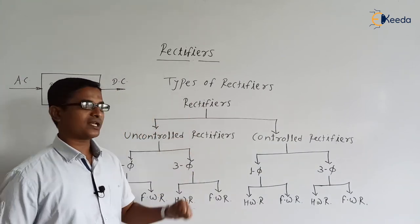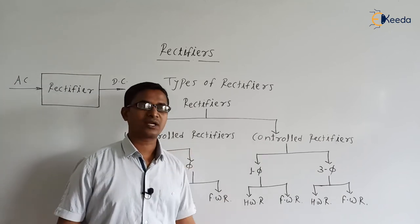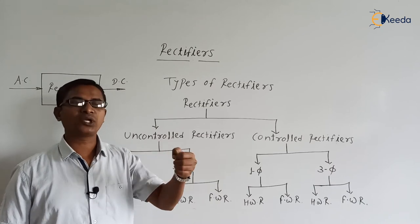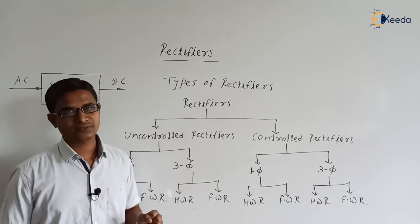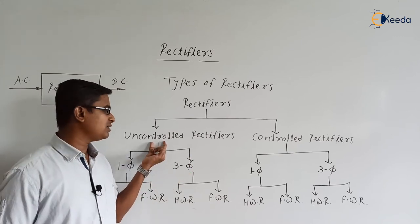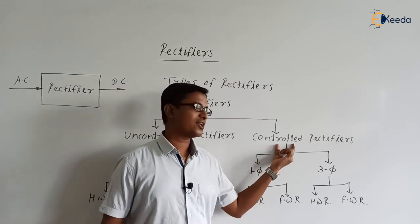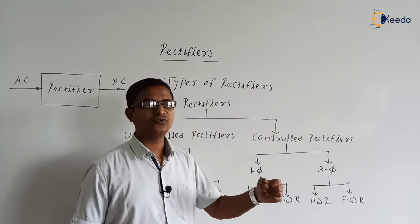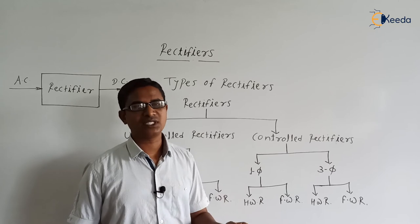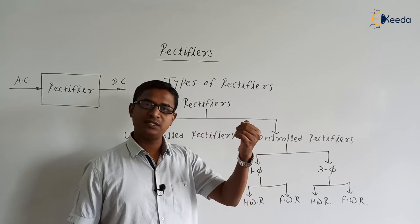Rectifiers are broadly classified into two types: uncontrolled rectifiers and controlled rectifiers. The uncontrolled rectifier means the rectifier circuitry where we use uncontrolled switches. An uncontrolled switch means a diode — the diode is an uncontrolled switch. So this type of rectifier is also known as a diode rectifier. Controlled rectifiers are rectifiers in which we use controlled switches, such as SCR, MOSFET, IGBT, etc.